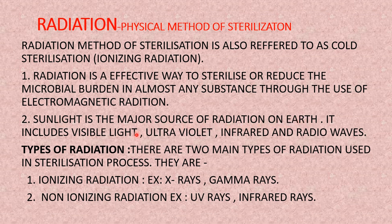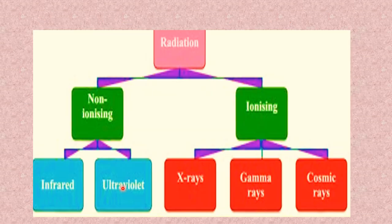Sunlight includes visible light, ultraviolet, infrared, and radio waves, of which UV is the most effective component. Radiations are majorly of two types: ionizing and non-ionizing. Ionizing radiation includes x-rays and gamma rays; non-ionizing includes UV rays and infrared rays.